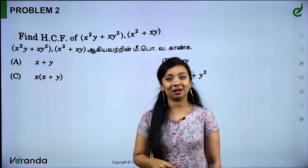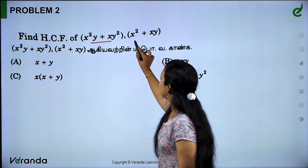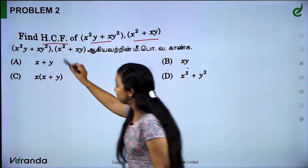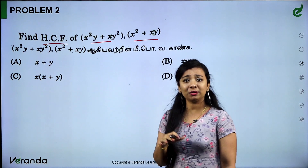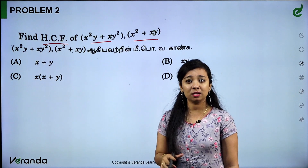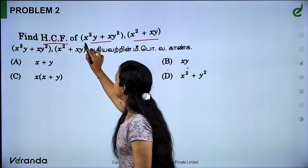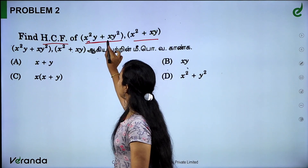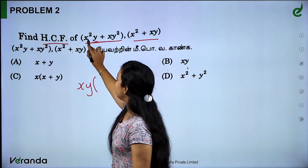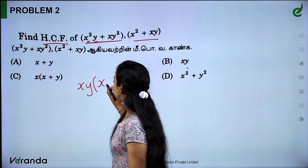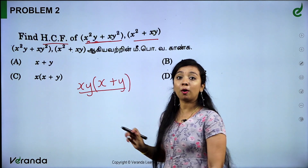Next we have polynomials. For polynomials with alphabets, we need to find the HCF — Highest Common Factor. We saw a shortcut in the last video: HCF is the common element. We have x and y. x and y — x is common, so we take x out. For example, x squared plus xy, we factor to get x times (x plus y).